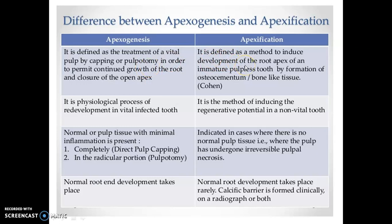Understand the difference: apexogenesis is done in a vital pulp; apexification in a non-vital pulp. Apexogenesis is a physiological process, whereas apexification induces regenerative potential in a non-vital tooth. Apexogenesis procedures include direct pulp capping or pulpotomy, while apexification uses calcium hydroxide (multi-visit) or MTA/bioceramic-based materials (single visit).